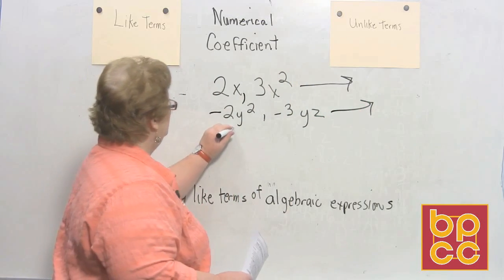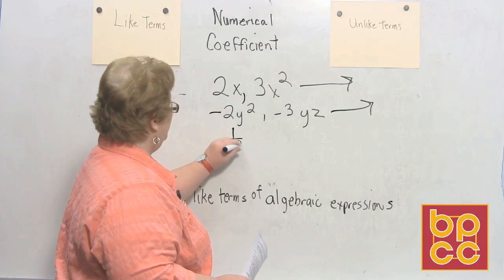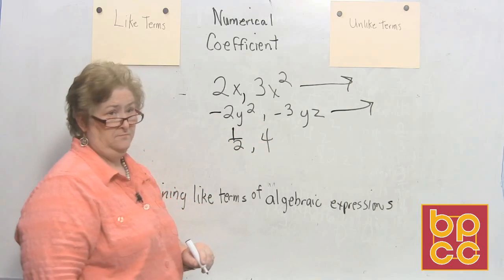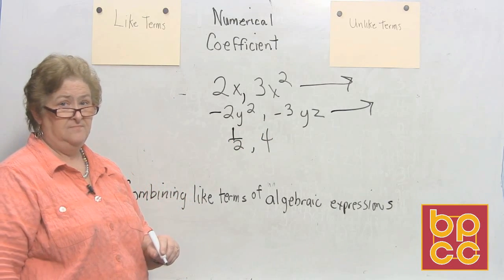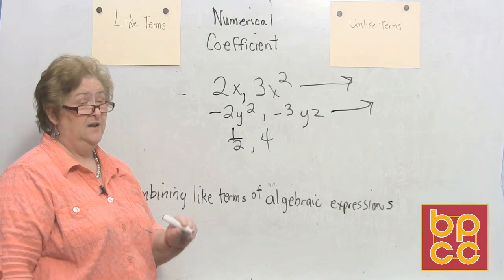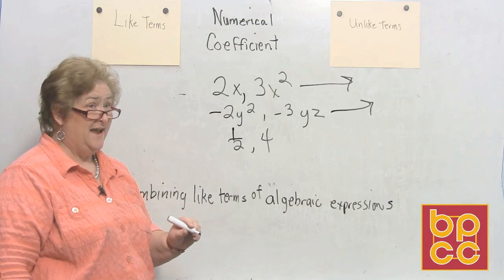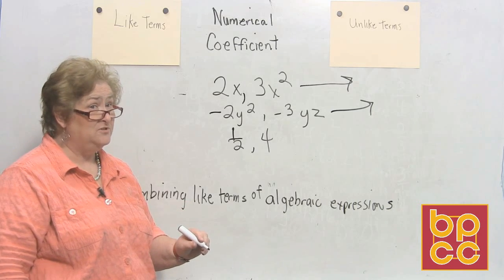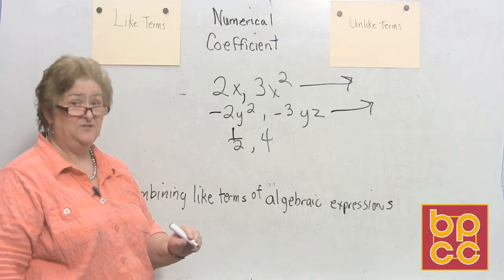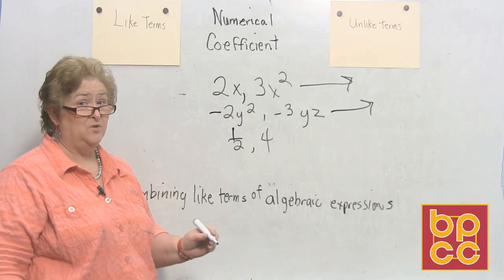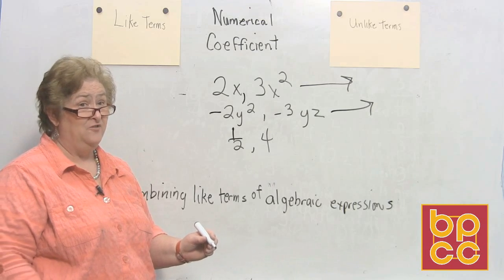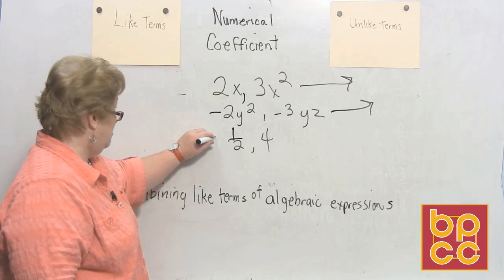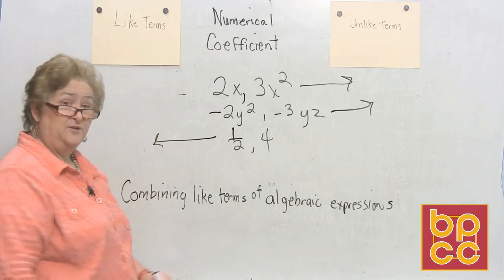How about this one? One half and the number 4. I'm trying to fool you here. One half and 4 — they don't have any variables, they don't have any exponents. And we can add, subtract, multiply, and divide fractions and whole numbers together. So these are going to go under like terms.